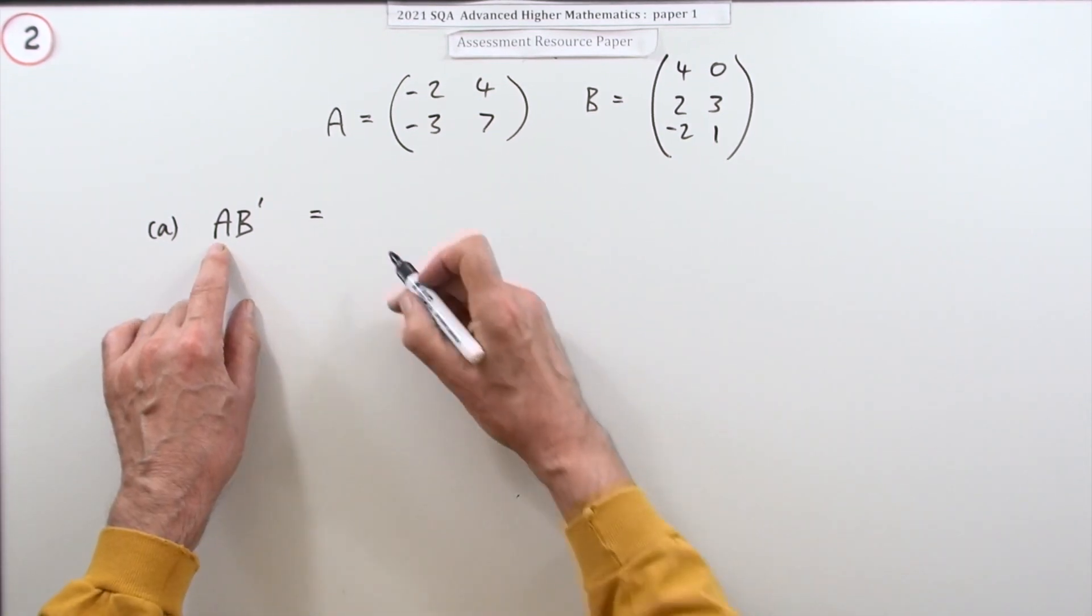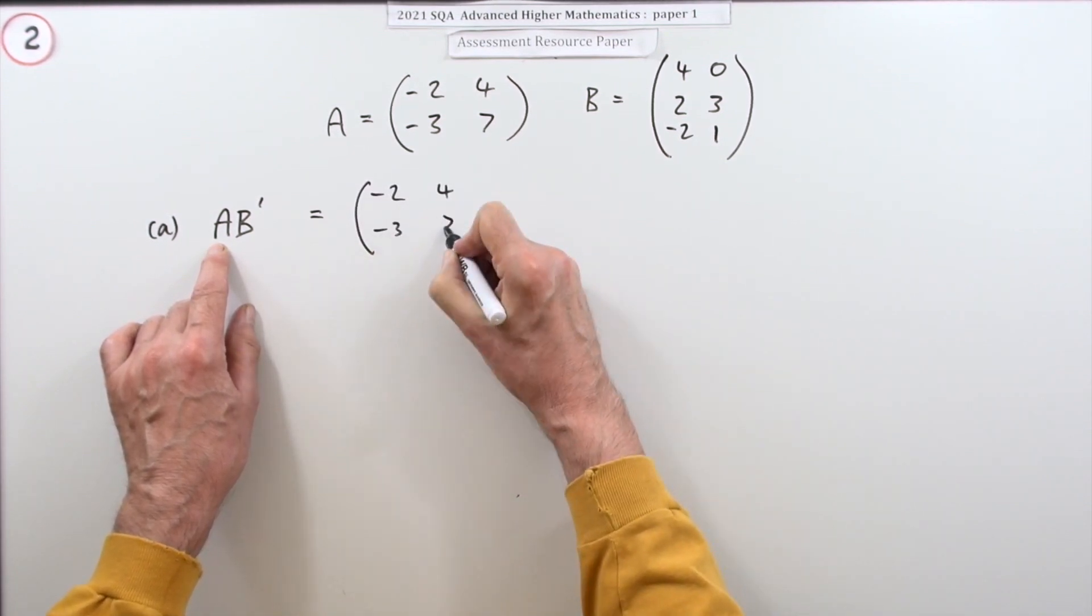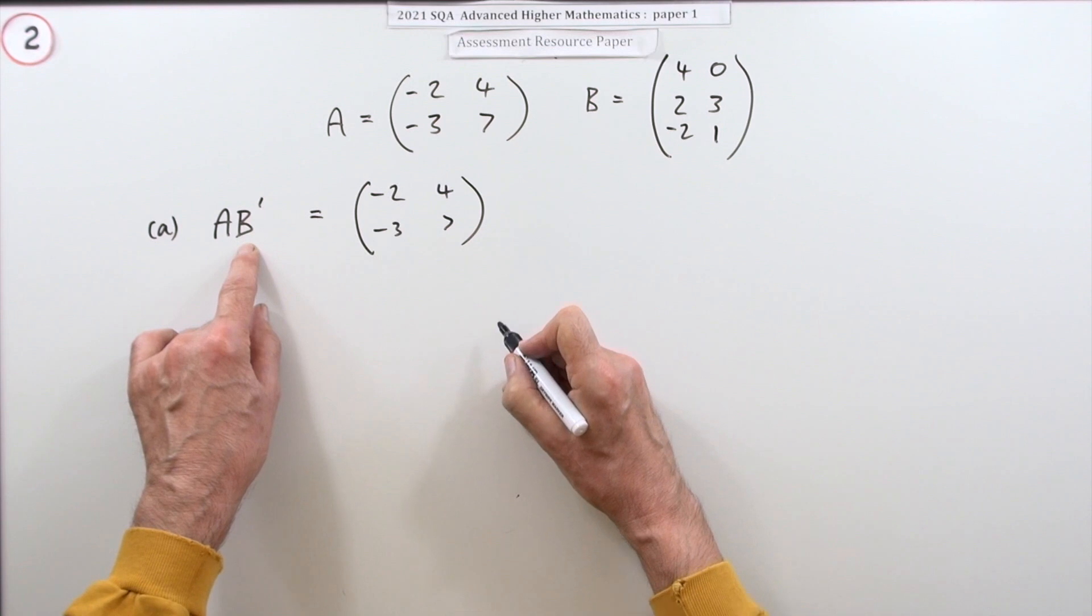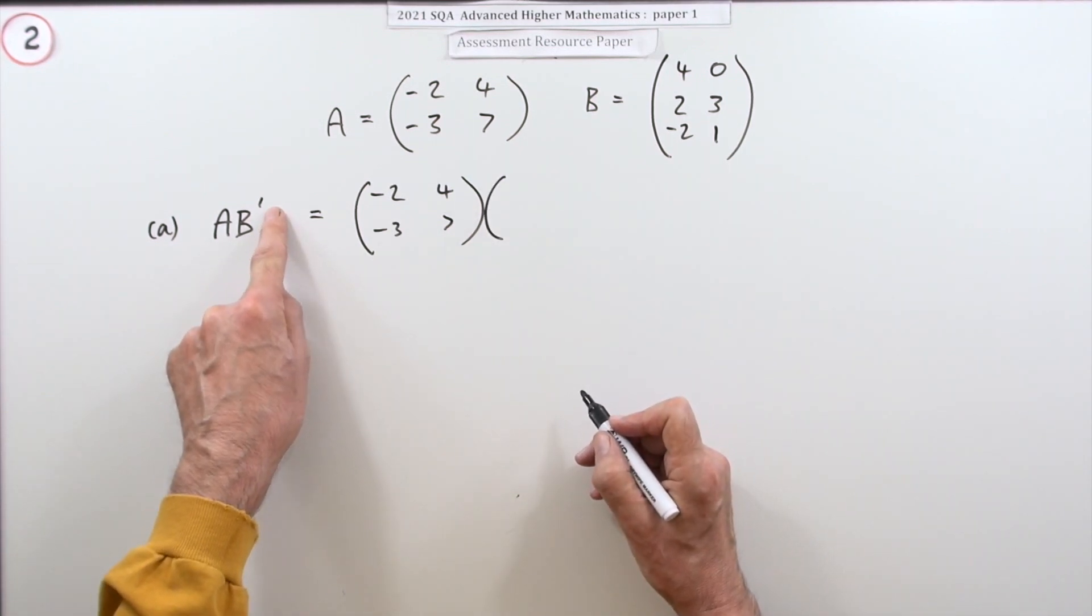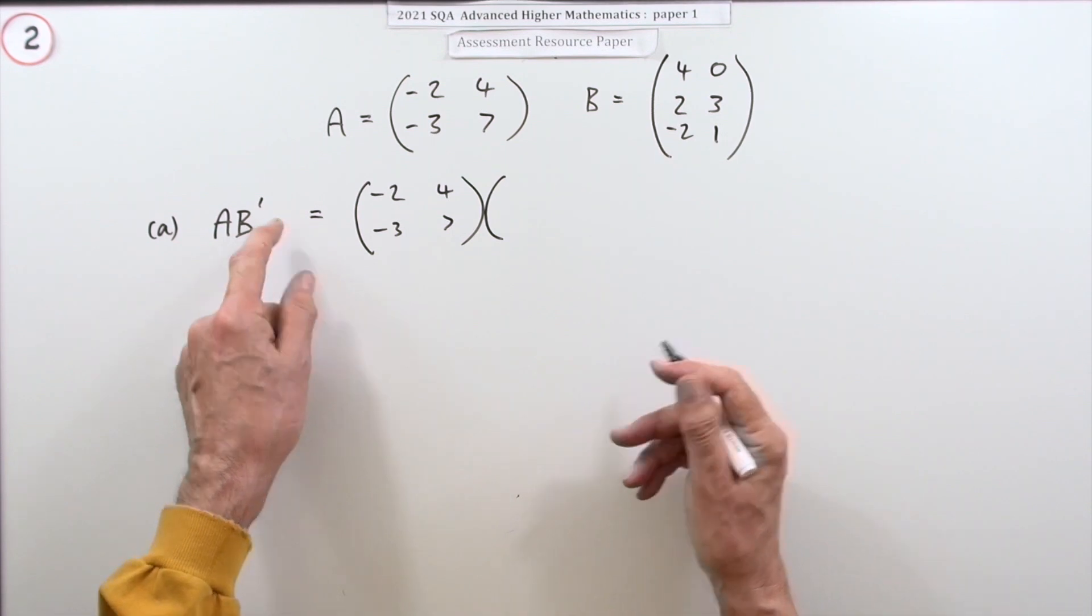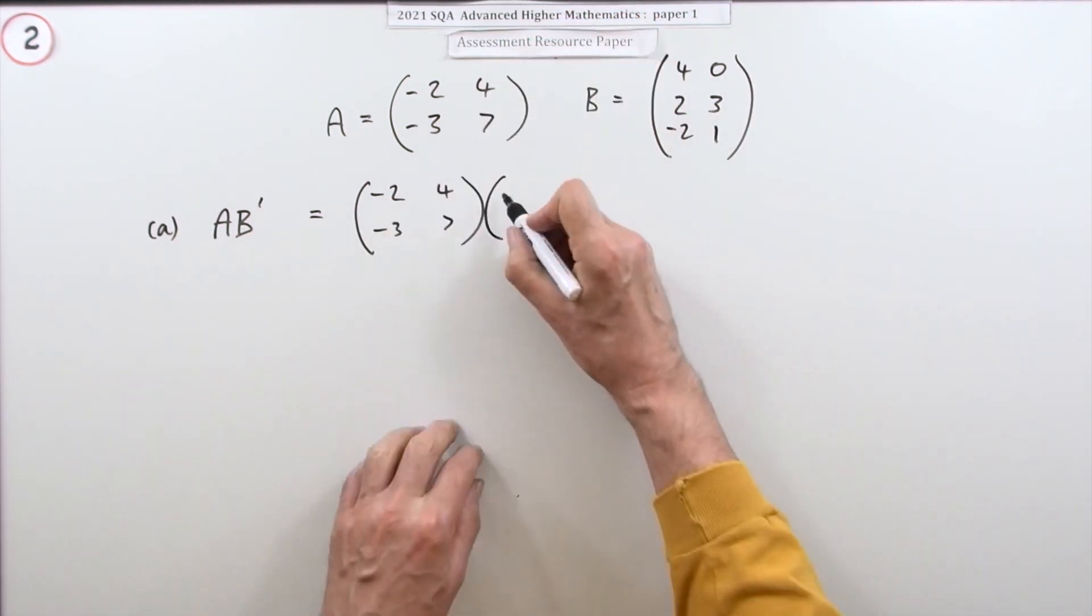So what have you got? Well, A is just whatever it says, so I've got (-2, 4; -3, 7). You have to multiply that by—and that little dash means the transpose of B. Now the transpose means just flip all the rows into columns: first row becomes first column, second row becomes second column, third row becomes third column.